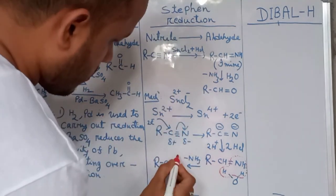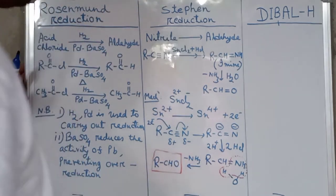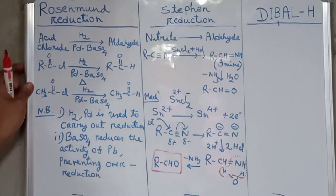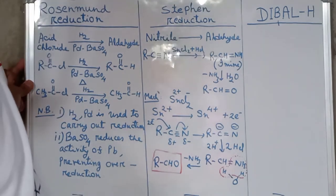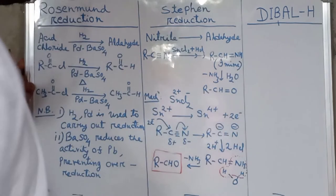So this is the final product, aldehyde. Aldehyde is prepared from nitriles by using stannous chloride and HCl. This is called Stephen reduction. Now we will discuss DIBAL-H.